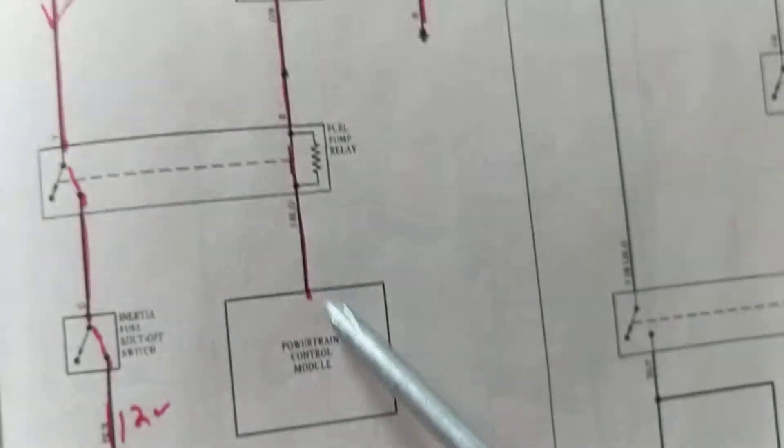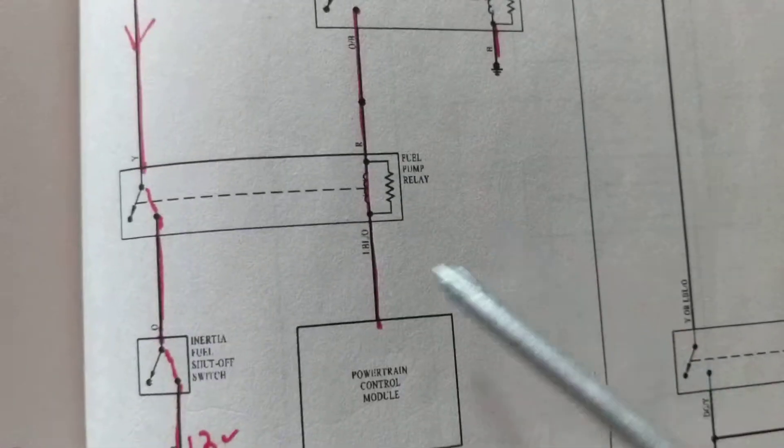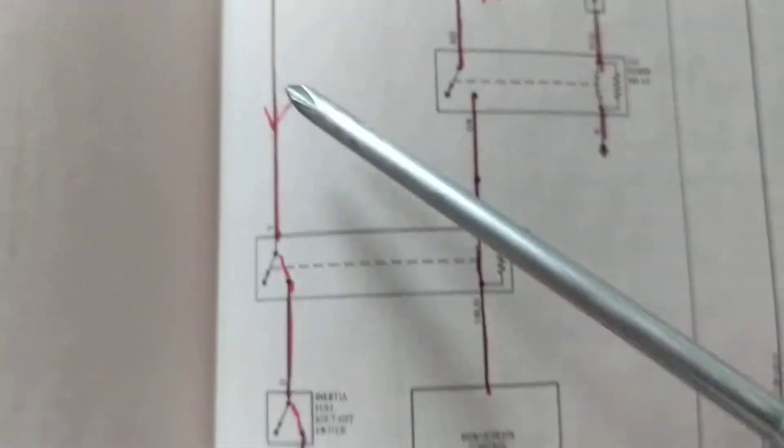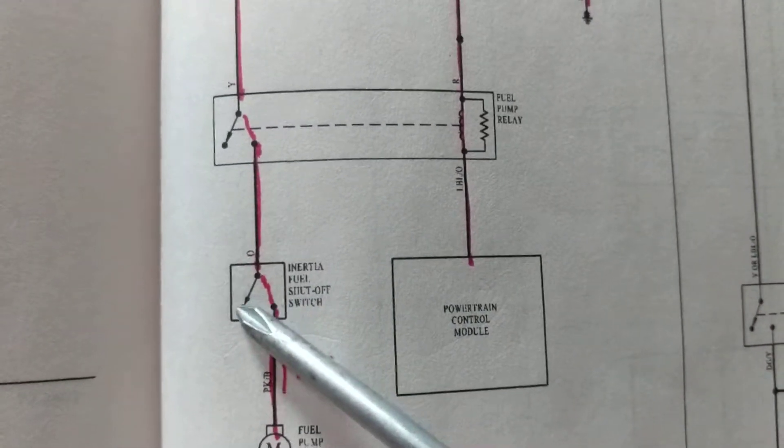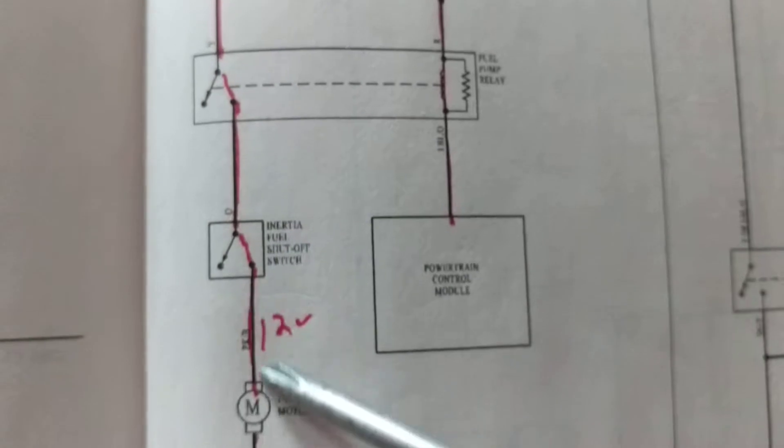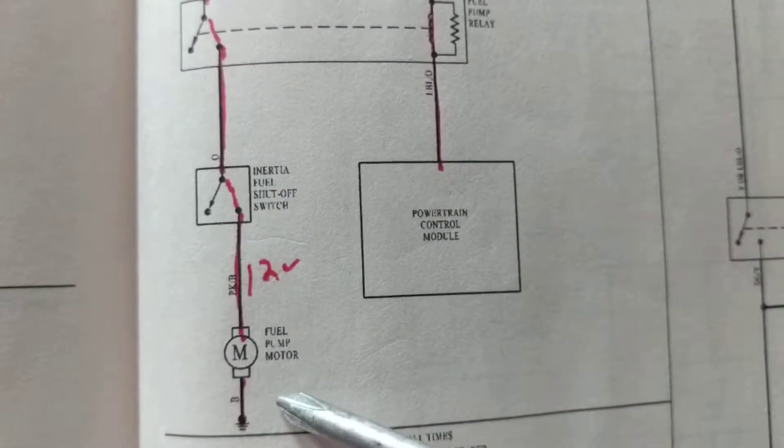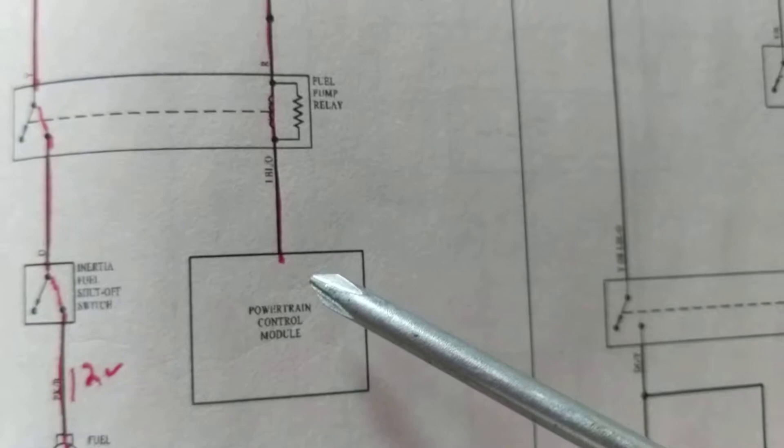We need the powertrain control module to give us a proper ground and to activate or give a control signal to this. If this is open, none of this will occur. Current cannot flow to the fuel pump motor, and that's the whole idea of it.